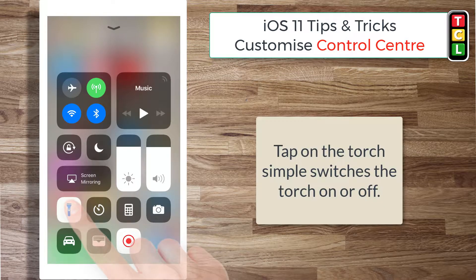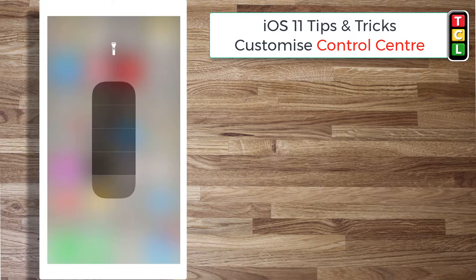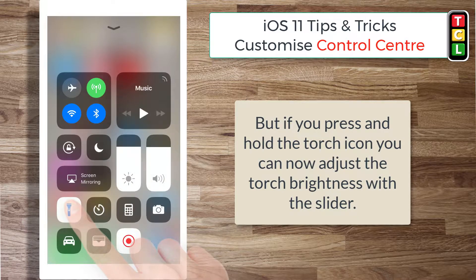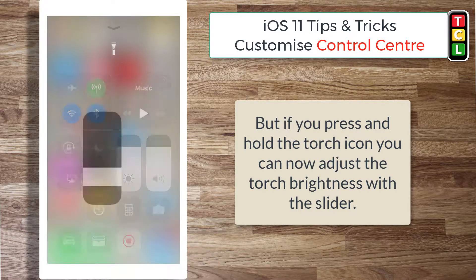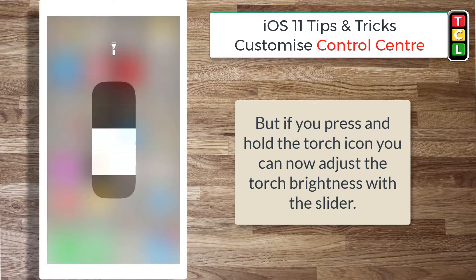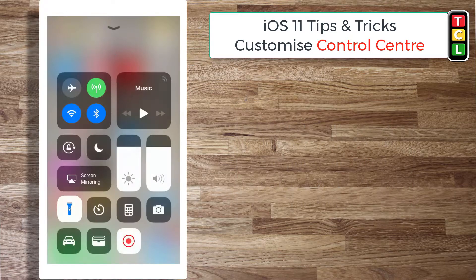Within control center, if you just tap the torch it will switch it on and off, but if you keep your finger on the button this allows you to adjust the gradient of brightness. You can turn it up and down to reduce the brightness of your torch — really nice little feature.